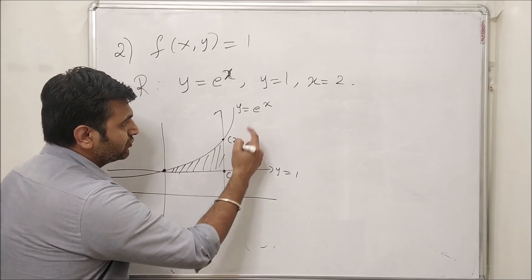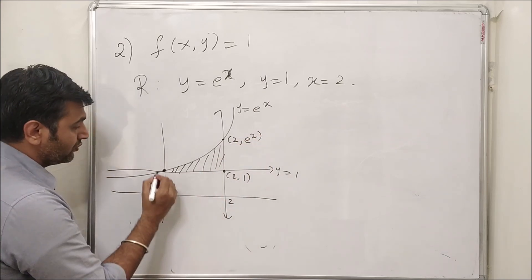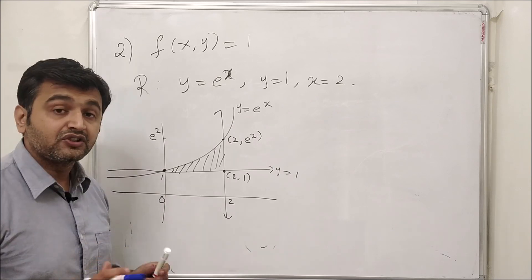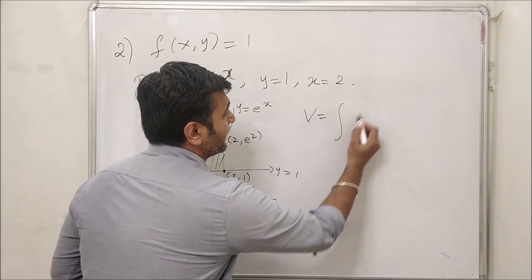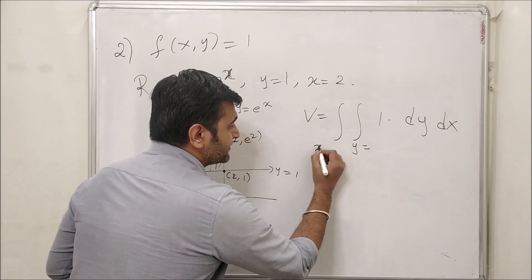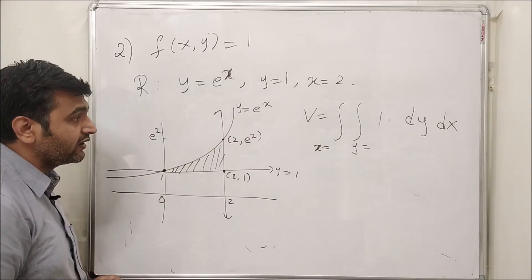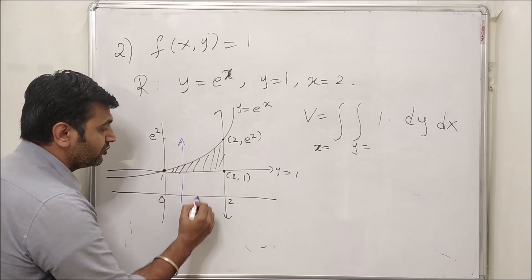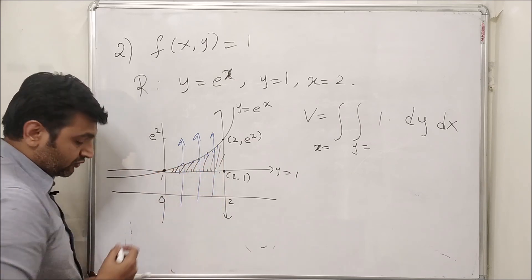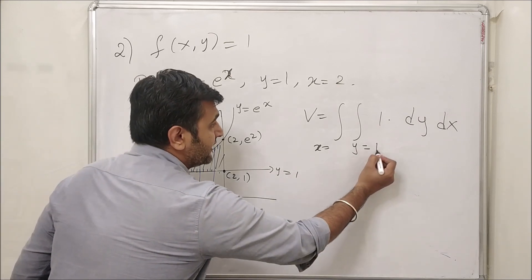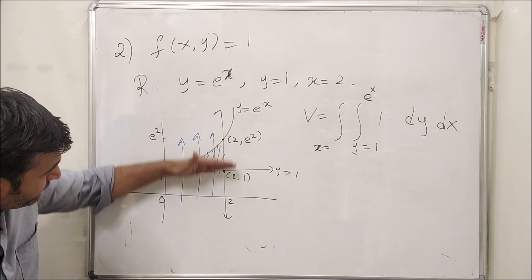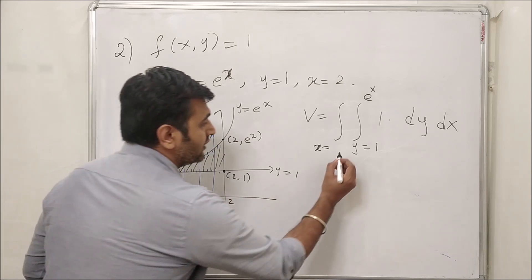Important points: at x = 2, y = 1 gives the point (2, 1), and y = e² gives the point (2, e²). For the order dy dx: the inner limits of y are found by drawing a line parallel to the y-axis — it enters at y = 1 and leaves at y = eˣ. Projecting the region onto the x-axis gives x going from 0 to 2.